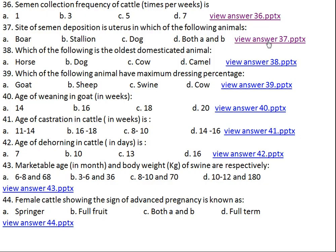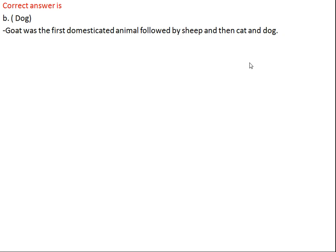Question number thirty-eight: which of the following is the oldest domesticated animal? Option A: horse, Option B: dog, Option C: cow, Option D: camel. The right answer is dog. Actually, the goat was the first domesticated animal, followed by sheep, cat, and dog. But since there is no option for goat or sheep, we choose dog.